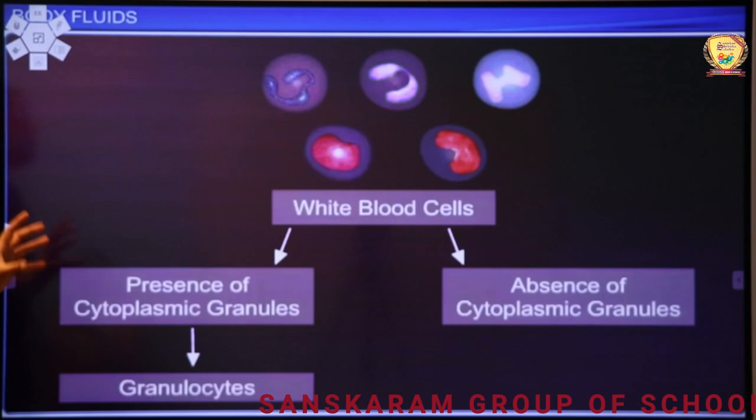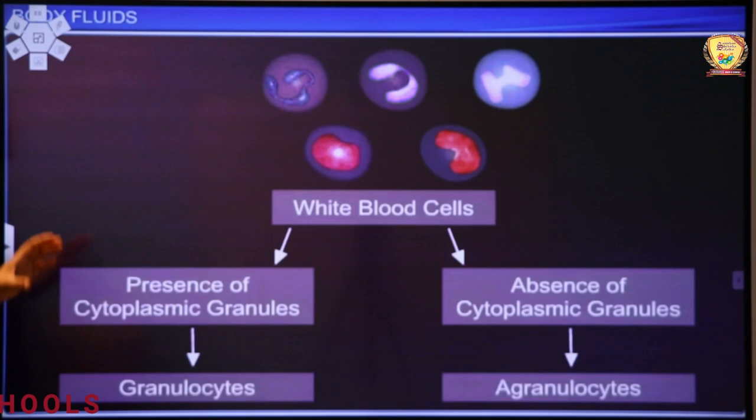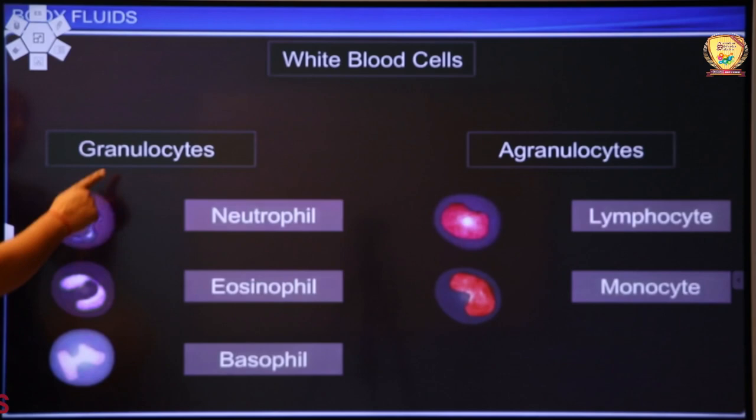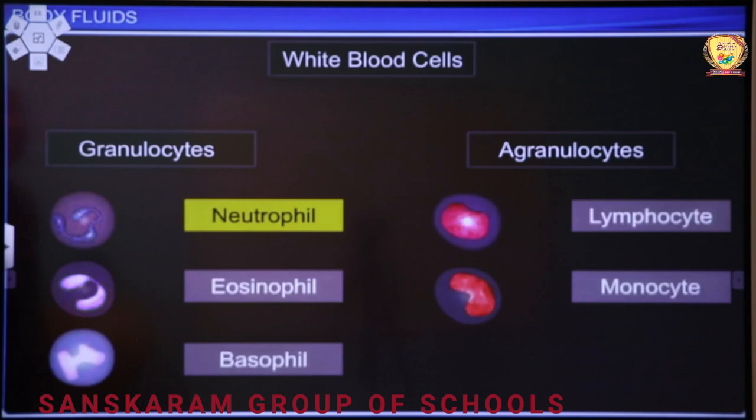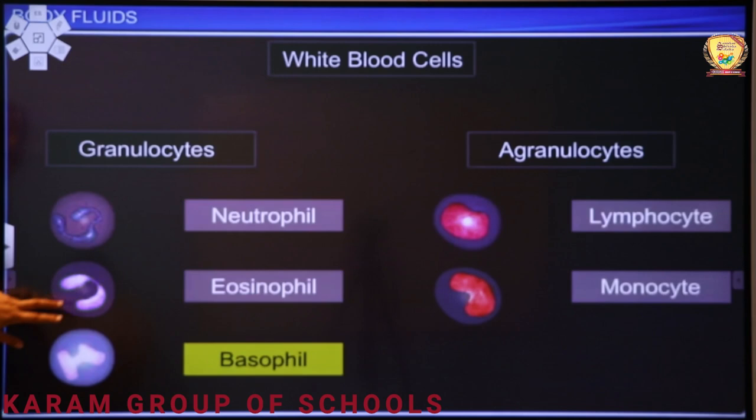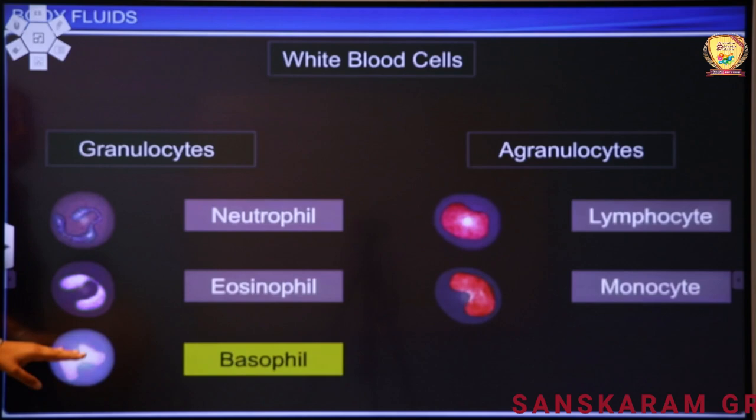As the video proceeds, try to recall everything we have studied. Granulocytes have granules present; agranulocytes have granules absent. Types of granulocytes: neutrophil, eosinophils, and basophils — functions of all three have been explained in detail. Look at the neutrophil nucleus — it appears multilobed with many lobes. Eosinophil has a bilobed nucleus; similarly basophil has two lobes. The smallest cells are basophils, also called mast cells.